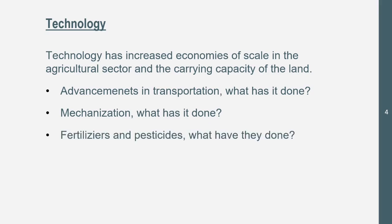Fertilizers and pesticides — what have they done? They have allowed people to grow bigger food. Fertilizers allow soil not to lose fertility so it can last longer, so farmers can make more money and grow more without worrying about plants not growing. Pesticides mean they don't have to worry about their plants getting eaten.